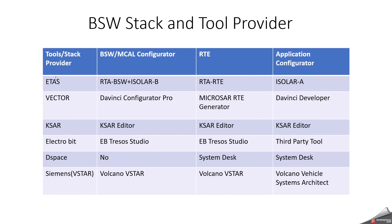If you look at this slide: if you are getting a base software stack from ETAS, they have a specific tool called ISOLAR-B and RTA-BSW, which is majorly used for base software configuration. For RTE generation, they have the RTA-RTE tool. For application software component configuration, they have ISOLAR-A. For Vector, the base software configuration tool is DaVinci Configurator Pro. On the RTE side, there is the MicroSAR RTE generator, and on the application side, DaVinci Developer.